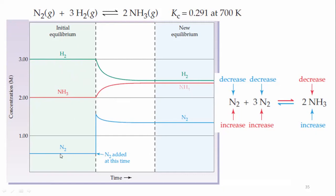Look at the graph values. This was the initial equilibrium. When you applied the stress — shown between the dotted lines — according to Le Chatelier's principle, this stress is relieved. When relieved, the system achieves another equilibrium.